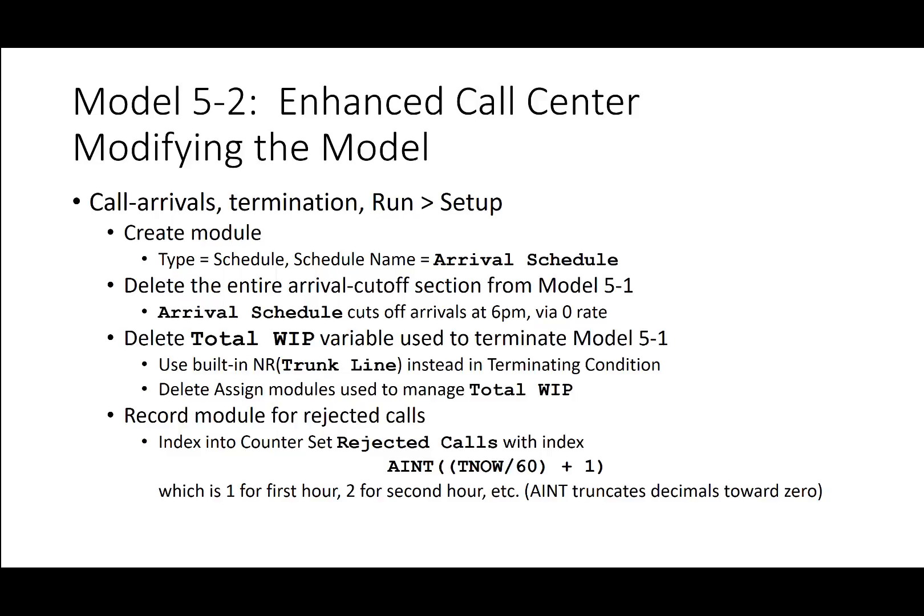Modifying the model: under call arrivals termination and run setup, the create module type will be schedule with the name 'arrival schedule.' Delete the entire arrival cutoff section from Model 5.1, as the arrival schedule will cut off arrivals at 6 p.m. via the zero value. Delete the total WIP variable termination from Model 5.1 and use the built-in NR trunk line in the terminating condition instead. Delete assign modules managing total WIP. For the record module for rejected calls, index to the counter set 'rejected calls' with an index of integer(TNow over 60) plus 1 — hour 1, hour 2, etc.